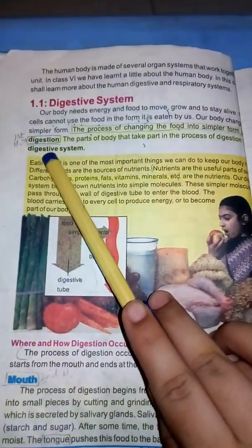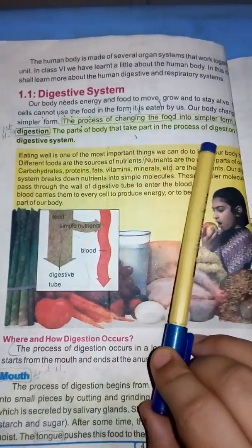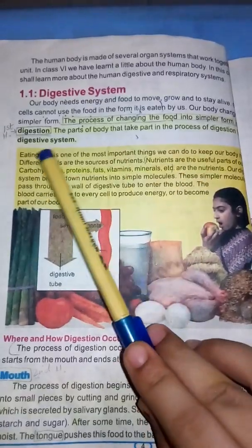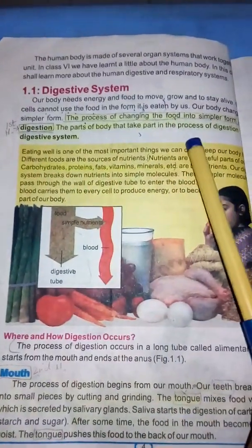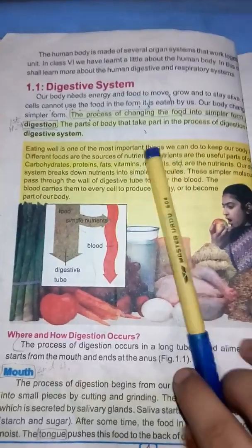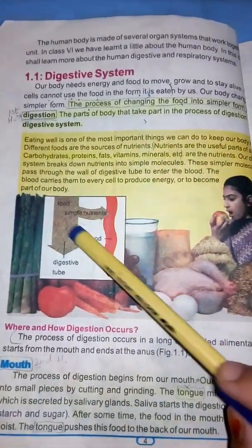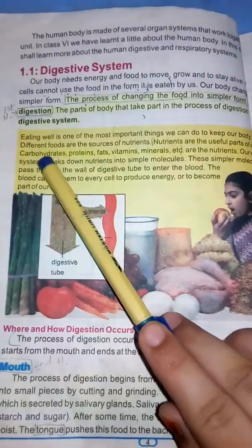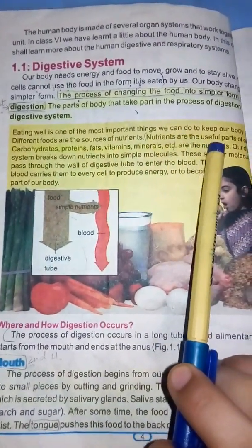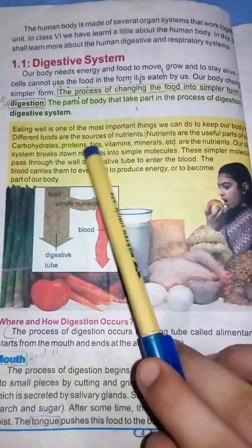The definition of the digestive system: the parts of the body that take part in the process of digestion — the parts which help our body in digestion — together we call the digestive system. Eating well is one of the most important things we can do to keep our body healthy.